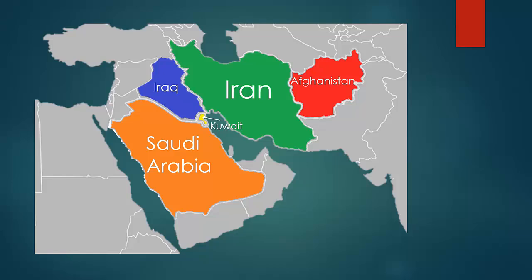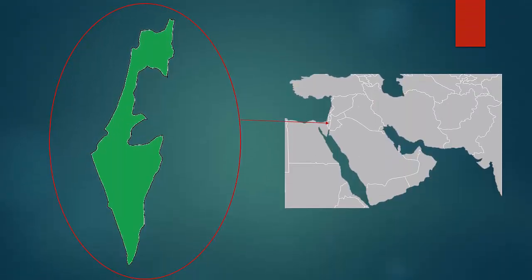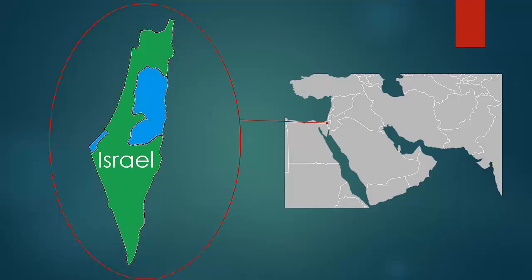South of Iraq and Kuwait is Saudi Arabia. North of Saudi Arabia is Syria, and north of Syria is Turkey. Here we have Israel, which is in the west. These two territories are the West Bank and the Gaza Strip. It's important to remember that these territories belong to Palestine, not Israel.